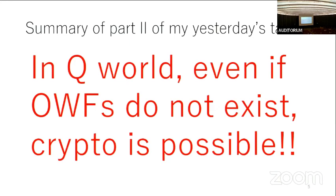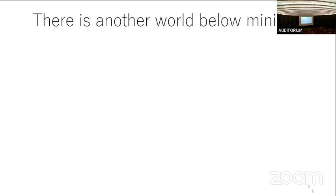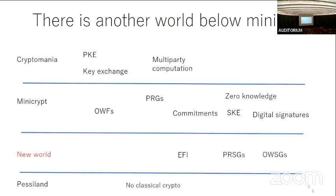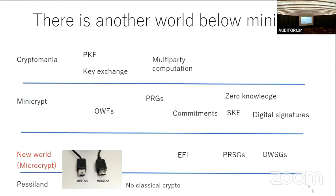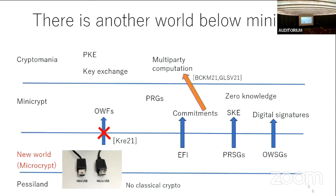The summary of the second part of my yesterday's talk is this: in the quantum case, the situation is very different. Even if one-way functions do not exist, cryptography is still possible. We have a new world in between Pessiland and Minicrypt, with new primitives like EFI pairs, TRSG, and one-way state generators. These seem to be weaker than one-way functions — Kretschmer showed these primitives could exist even if one-way functions do not exist — but they imply many nice applications like commitment, SKE, digital signatures, and even multi-party computation.